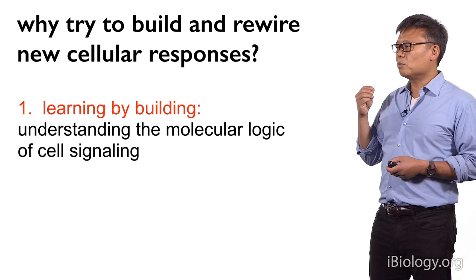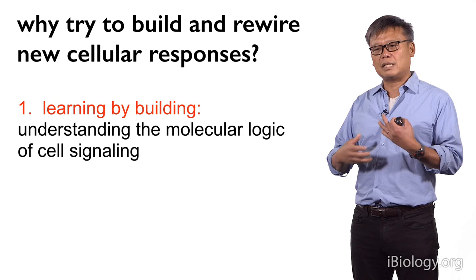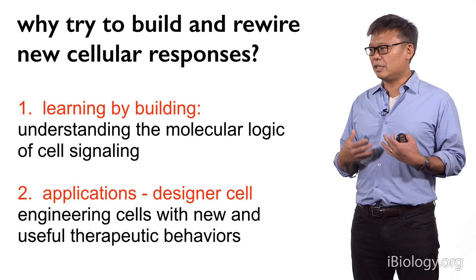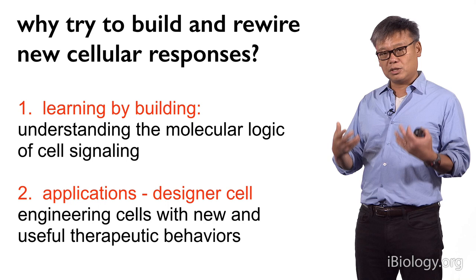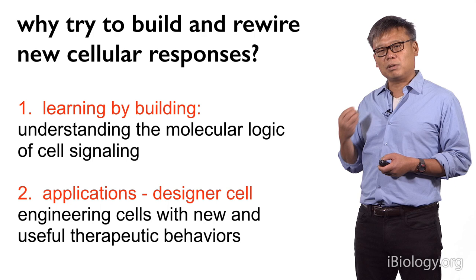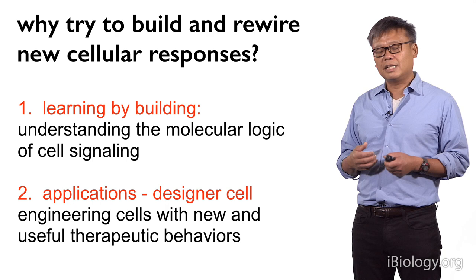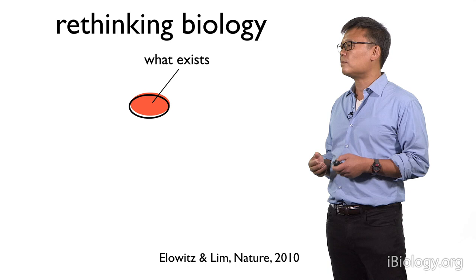So what we're interested in is trying to build and rewire new cellular responses. First of all, we really feel that we can learn by building — that by tinkering with these systems and putting them together in different and systematic ways, we can reach a deeper understanding of the molecular logic of how cell signaling systems are put together. Second, if we really understand these rules and principles of how evolution has used molecular parts to build new kinds of cellular responses and behaviors, then maybe we can actually apply this to build designer cells that have new customized behaviors — including cells that could carry out very sophisticated therapeutic actions like being able to seek out and kill cancer cells.